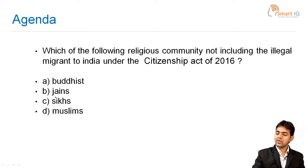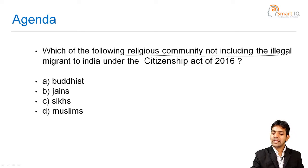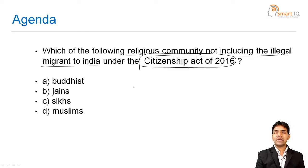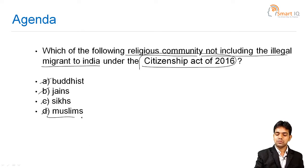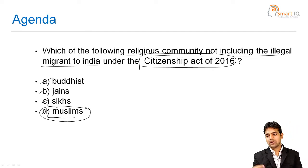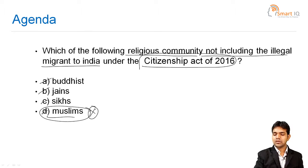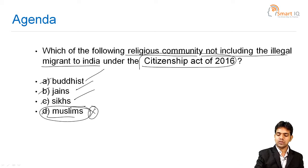Next question: Which of the following religious communities is NOT included among illegal migrants to India under the Citizenship Amendment Act of 2016? Option A: Buddhist. Option B: Jainism. Option C: Sikhs. Option D: Muslims. The answer is Option D — Muslims are not included. The act covers Buddhist, Jain, Sikh, Hindu, and other religions from neighboring countries, but Muslims are not mentioned in the Citizenship Amendment Act of 2016.